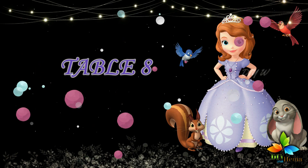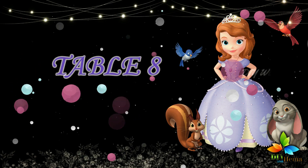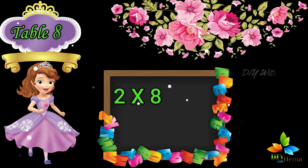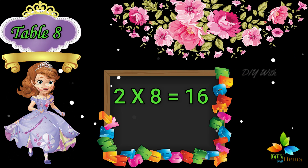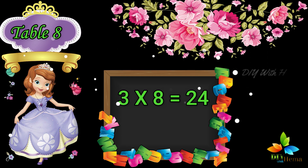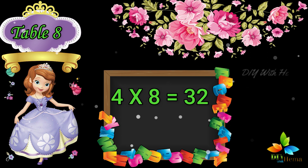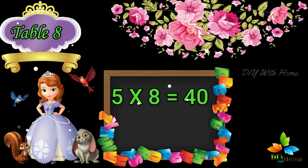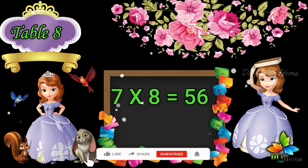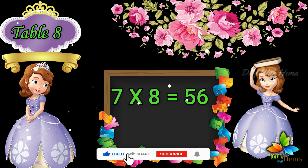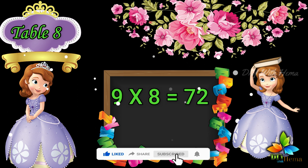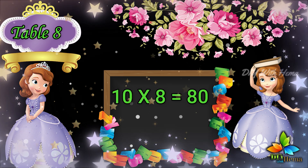Table eight. One, eight is eight. Two, eights are sixteen. Three, eights are twenty-four. Four, eights are thirty-two. Five, eights are forty. Six, eights are forty-eight. Seven, eights are fifty-six. Eight, eights are sixty-four. Nine, eights are seventy-two. Ten, eights are eighty.